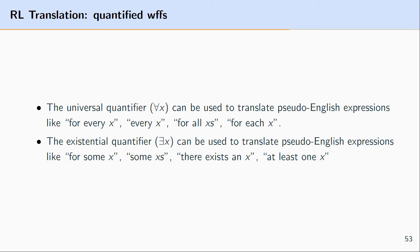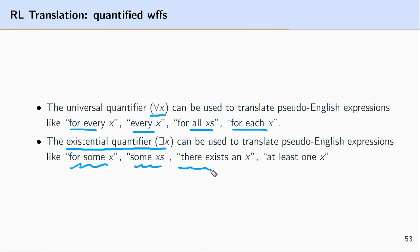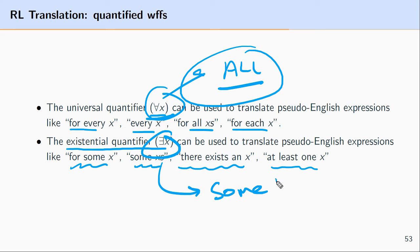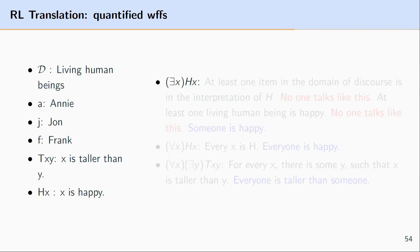Now let's look at quantified translations. We can understand the universal quantifier as expressing 'for every x', 'all x', or 'each x', and the existential quantifier as 'for some x', 'there exists an x', or 'at least one'. In short: universal quantifier means 'all', existential means 'some'.